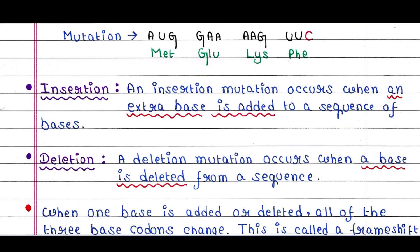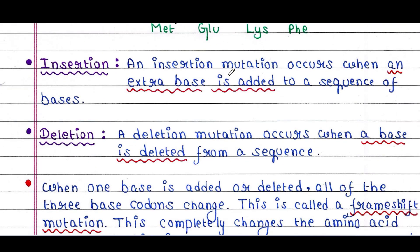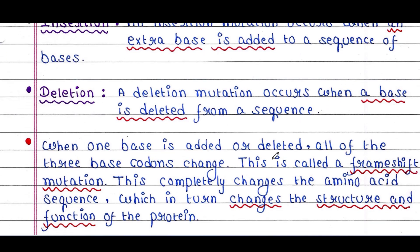Next, we will talk about insertion and deletion. An insertion mutation occurs when an extra base is added to a sequence of bases, and a deletion mutation occurs when a base is deleted from a sequence. When one base is added or deleted, all of the three-base codons change — this is called a frameshift mutation.